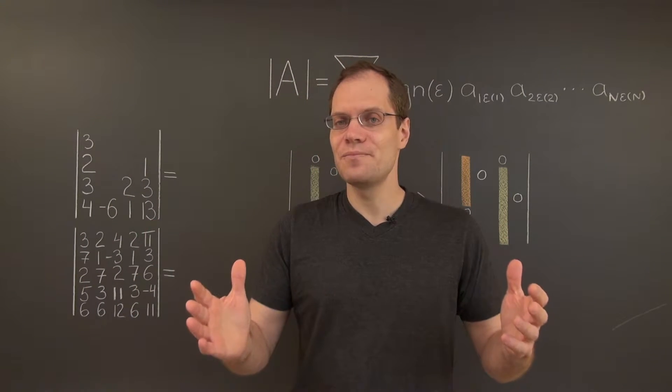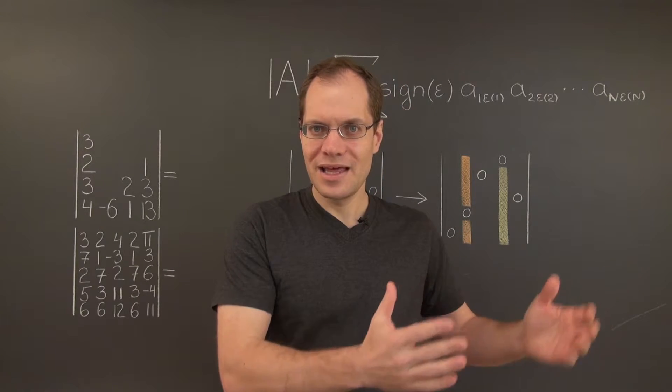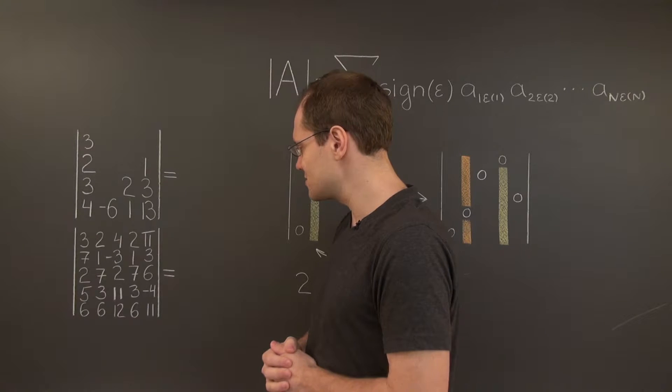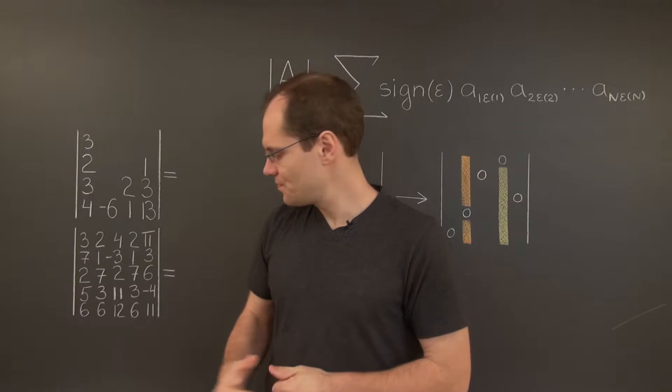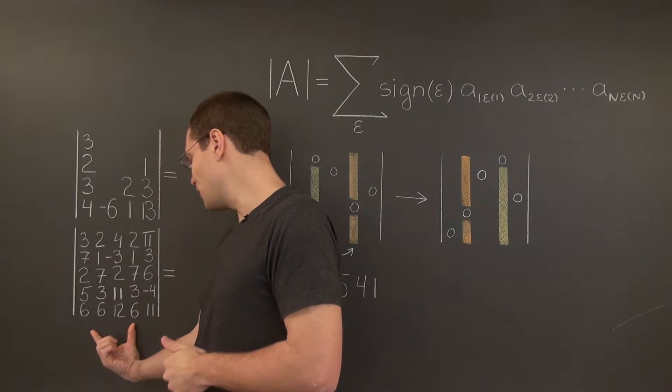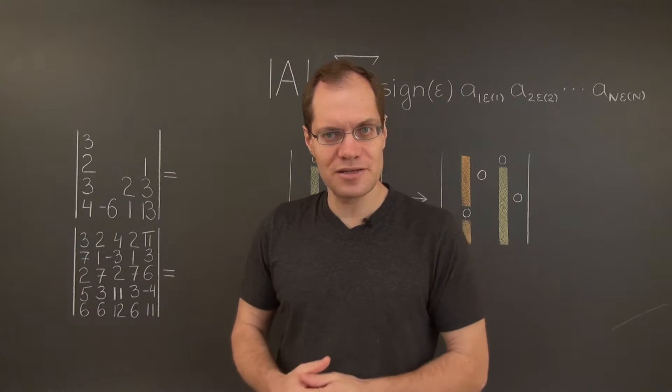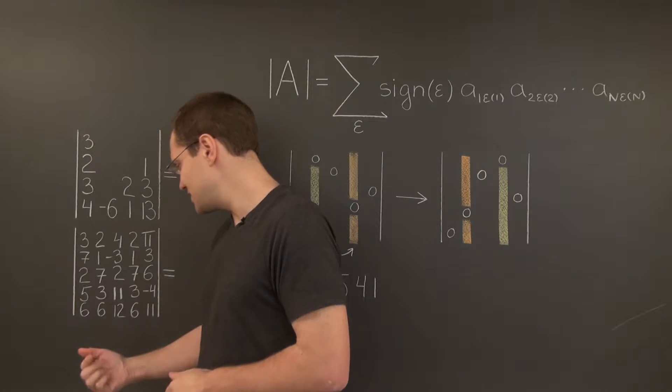In fact, let's first show how the alternating property implies that. Let's look at this 5x5 matrix with two identical columns, columns 2 and 4. And let's consider what will happen to the determinant when we switch these two columns.